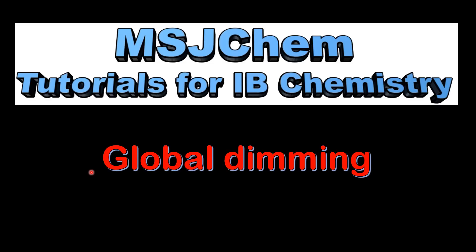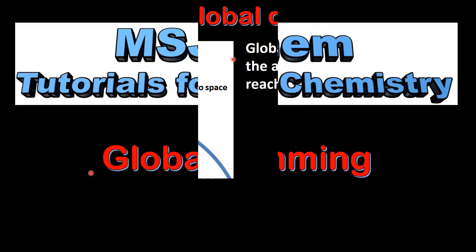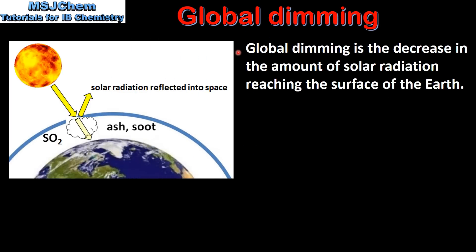This is MSJChem. In this video I'll be looking at Global Dimming. Global dimming is the decrease in the amount of solar radiation reaching the surface of the earth.